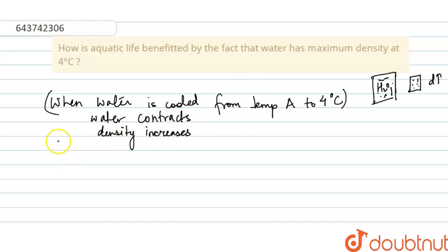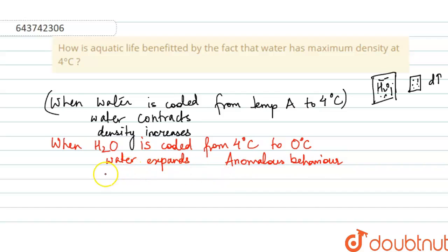But there is this different behavior of water. When water, H2O, is cooled from 4°C to 0°C, what happens? Water starts expanding. This is known as anomalous behavior, and since it expands, obviously density will decrease.